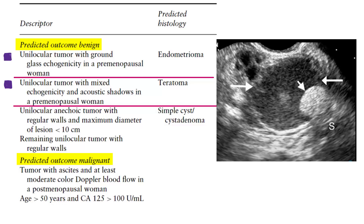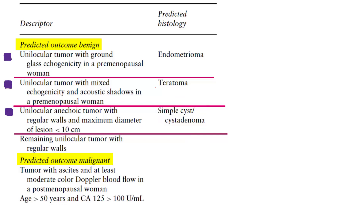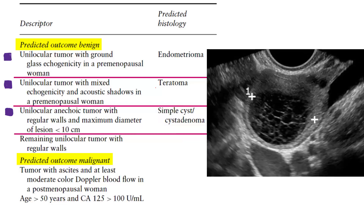A unilocular tumor with mixed echogenicity and acoustic shadow in a premenopausal woman is suggestive of teratoma. A unilocular anechoic tumor with regular walls and a maximum diameter less than 10 cm is suggestive of a simple cyst or cyst adenoma. A remaining unilocular tumor with regular walls can be a functional cyst such as a hemorrhagic cyst.